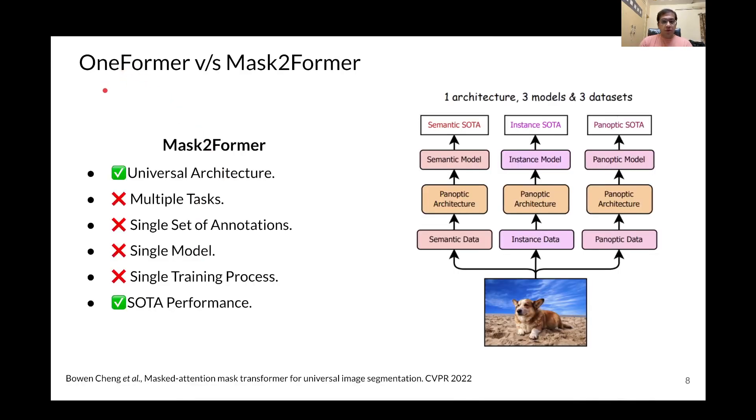One major baseline for our work is Mask2Former, which proposed a universal architecture and achieved state-of-the-art performance while training with a single architecture on each of the three image segmentation tasks. Still, it was not able to tackle multiple tasks with a single model and had to train individually on each task, resulting in individual training processes for specialized models.